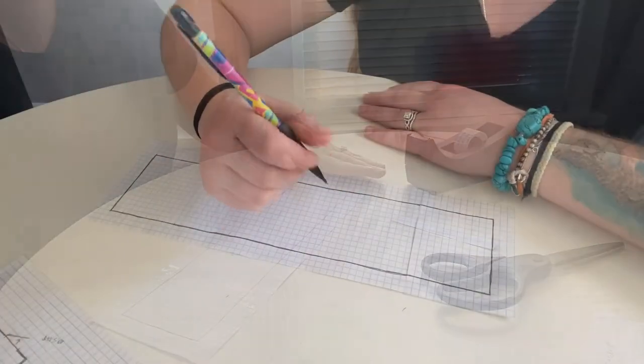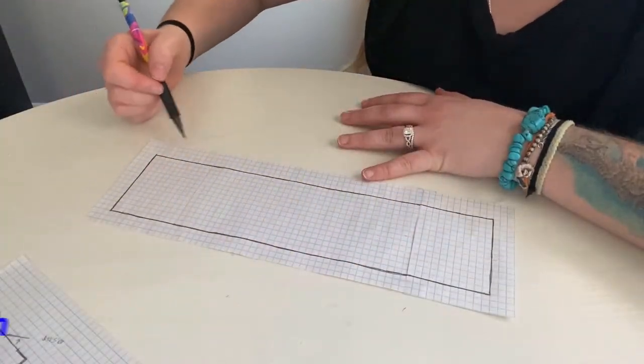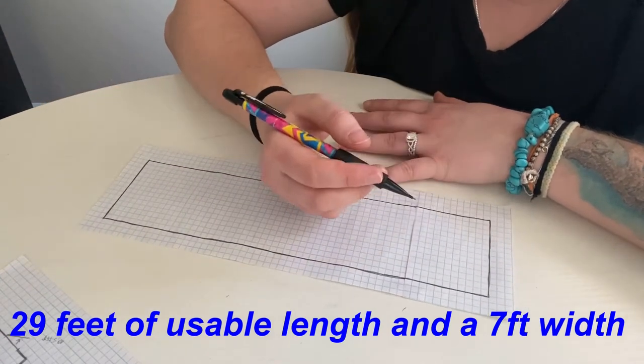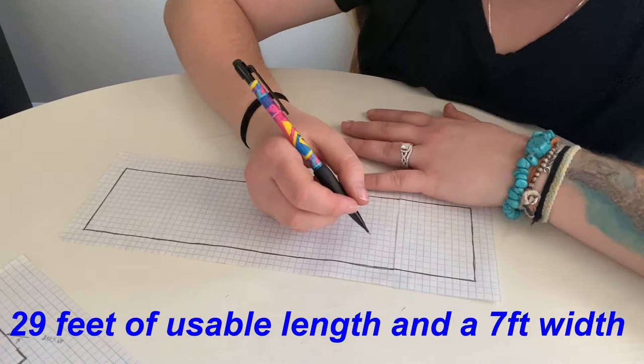So, now that we have the outside of our bus drawn, we have about 29 feet of interior length that we can use for our bus.